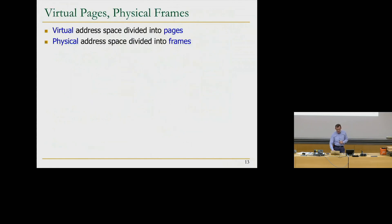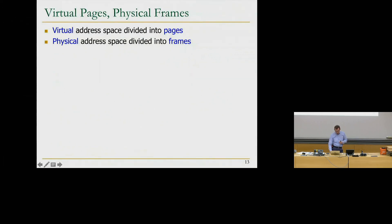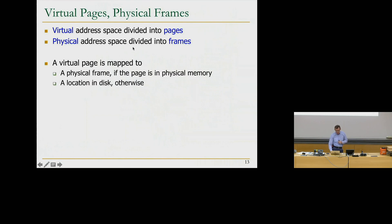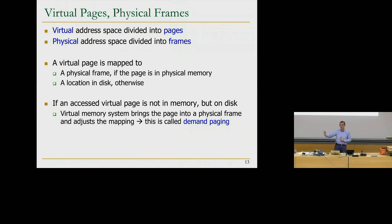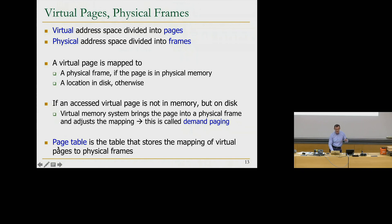Virtual address spaces divide into pages — usually 4 or 8 kilobytes, though today there are bigger page sizes as well. Physical address spaces divide into frames. A virtual page is mapped to a physical frame if the page is in physical memory, or to a location on disk otherwise. That's the mapping in the page table. If a virtual page is not in memory but on disk, the virtual memory system — hardware and software cooperatively — brings the page into a physical frame and adjusts the mapping. This is called demand paging, and most systems today have it.